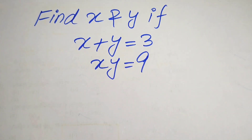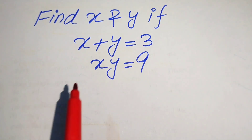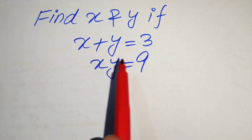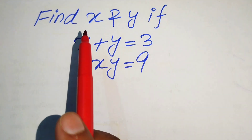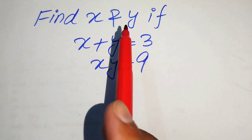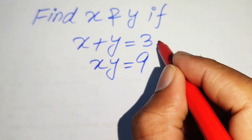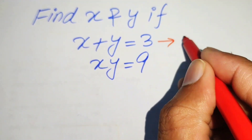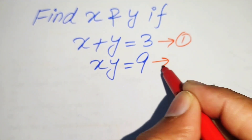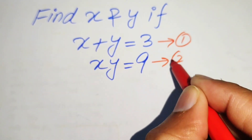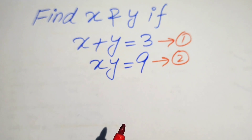Welcome. We solve this algebra problem where x plus y equals 3 and x times y equals 9. We call these equation number 1 and equation number 2.